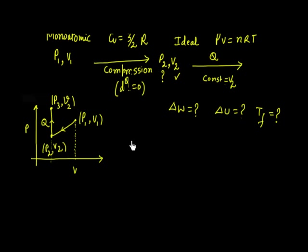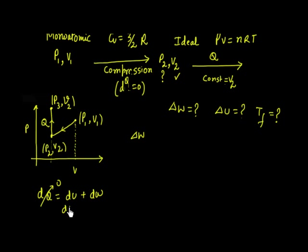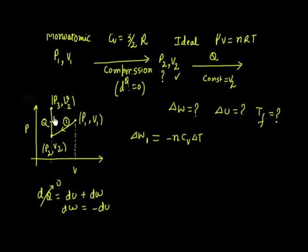For the work done in process 1 (adiabatic): DQ = 0, so from the first law DQ = DU + DW, we get DW = −DU = −NCV ΔT. So ΔW1 = −NCV(T2 − T1). I need the temperatures, which I will calculate. N = 2 mol is given.